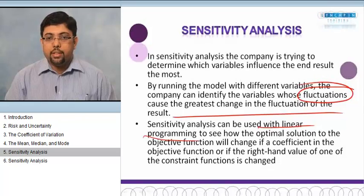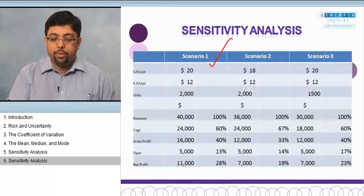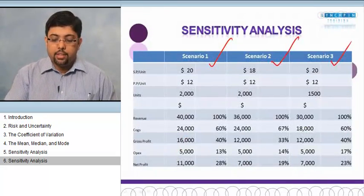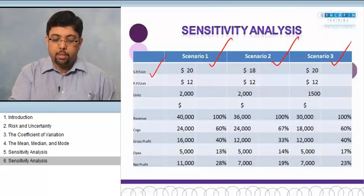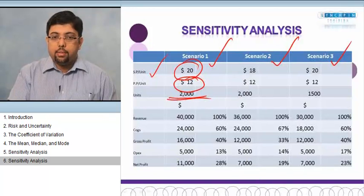What I have done is I have designed this example, and we are going to look at this example. In this example, you will see that we have three scenarios. In the first one, the selling price per unit is $20, the purchase price per unit is $12, and the quantity we are selling is 2,000.